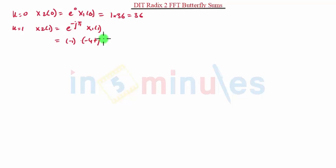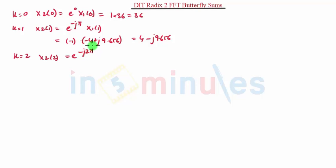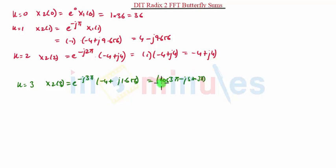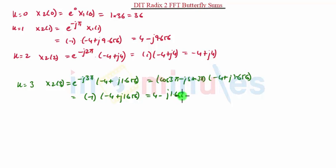So for k = 1: the result is 4 − j·9.656. For k = 2: X2(2) = e raised to minus j·2π times (−4 + j·4). Since e raised to minus j·2π equals cos 2π − j·sin 2π = 1, the value is 1 × (−4 + j·4) = −4 + j·4. For k = 3: X2(3) = e raised to minus j·3π times (−4 + j·1.656). Since cos 3π = −1 and sin 3π = 0, this gives −1 × (−4 + j·1.656) = 4 − j·1.656.